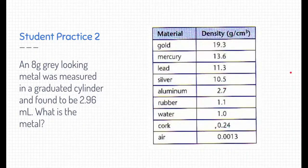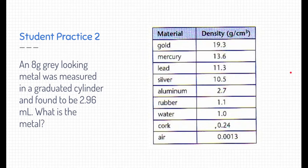Alright, here's a second practice, a little bit different. Here we have an eight gram gray looking metal, and it was measured using a graduated cylinder and found to be 2.96 milliliters. We can determine what this metal is because density is an intensive property. Pause the video and see if you can figure out what the metal is.